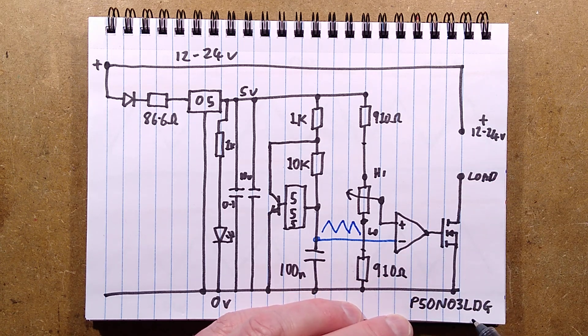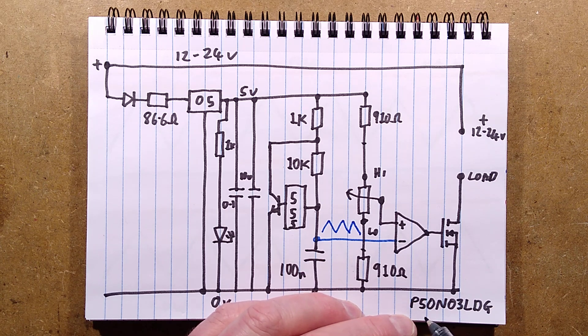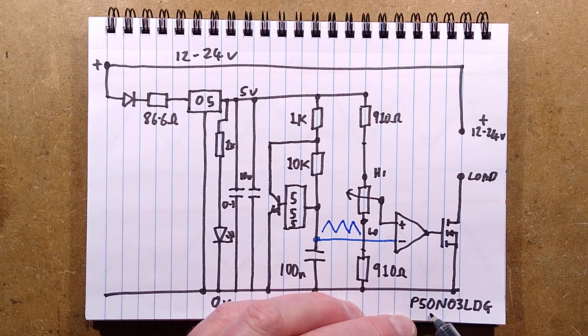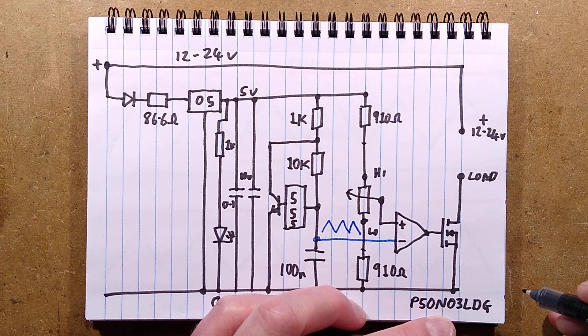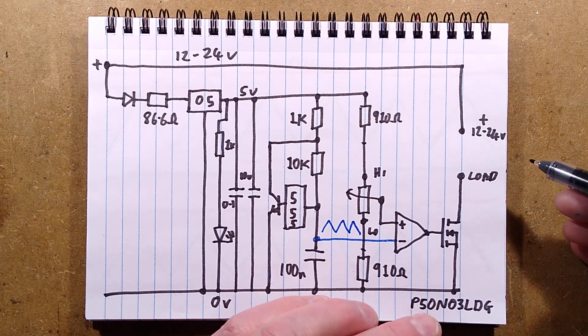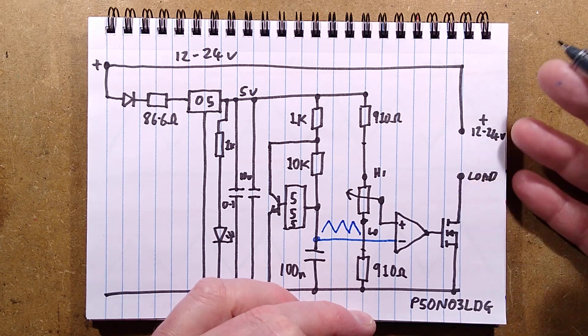So here's the MOSFET. It's a STP36NF06L. I think that is to do with the voltage rating, 50 volts and 3 amps. It does say it's a 3 amp unit, capable of switching 3 amps. And this can control resistive or LED loads.